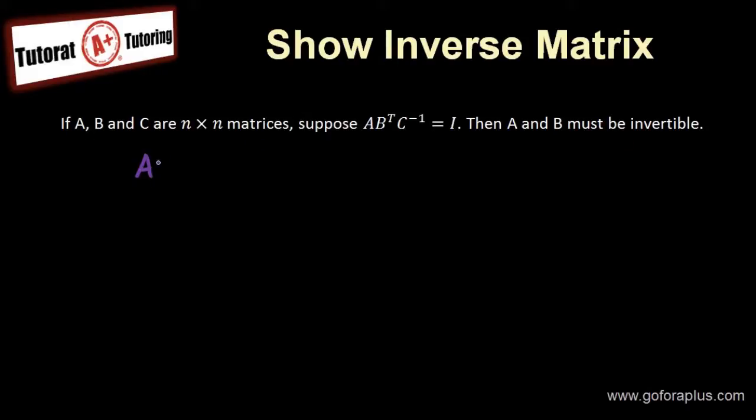So how do we do this? So I have AB^T C^(-1) = I. Now obviously, this must be C, right, because C times C^(-1) is equal to I.